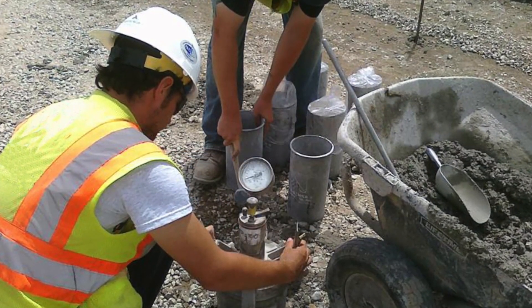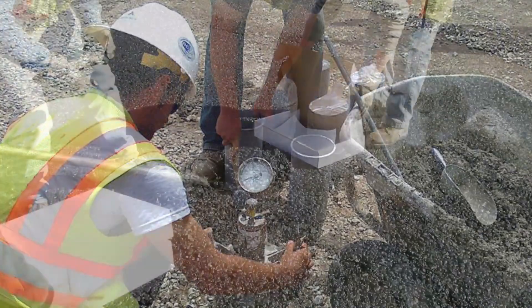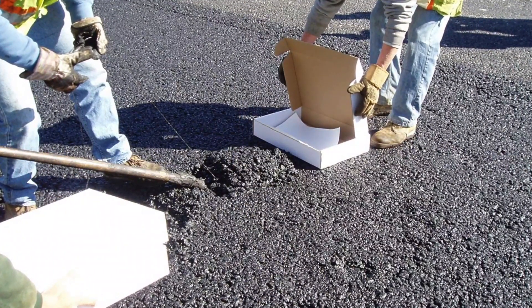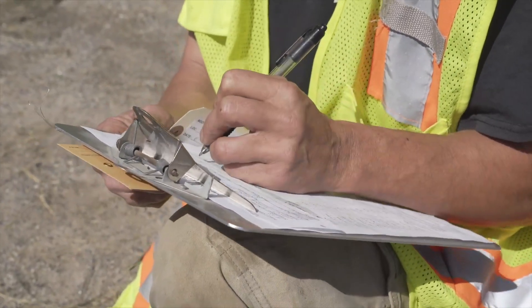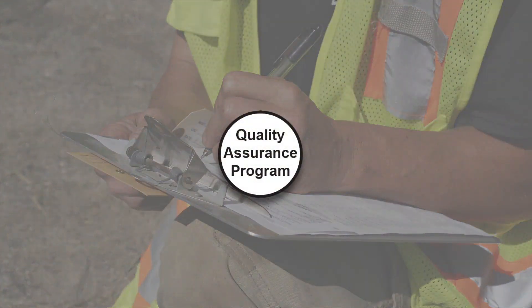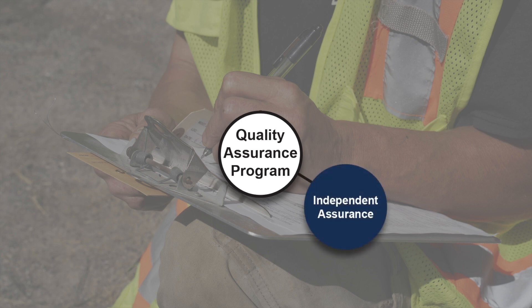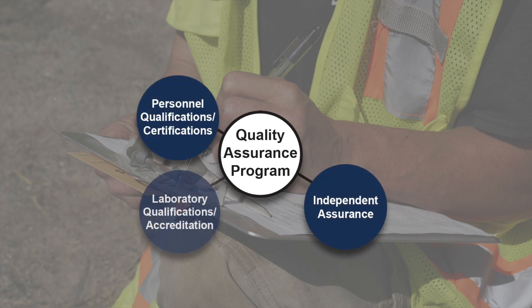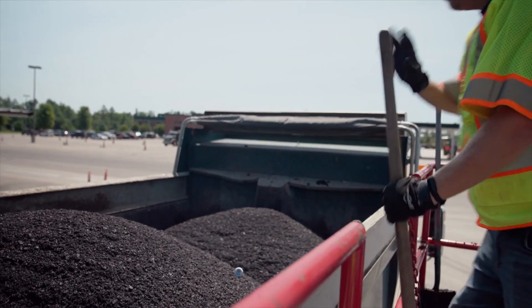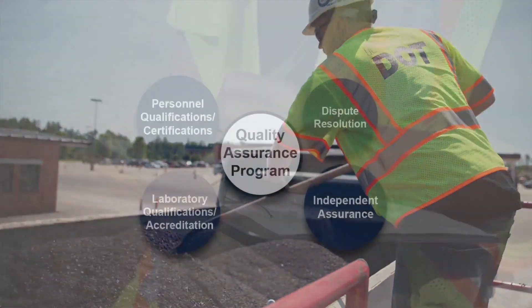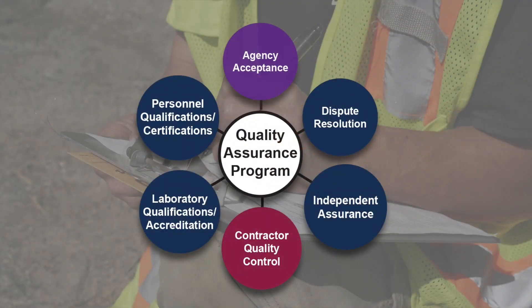Quality assurance responsibilities are shared by the contractor and the agency to achieve a project's contracted level of quality. There are six elements which define a robust state DOT quality assurance program, considered throughout the life of a project. Four elements most directly address sources of sampling and testing variability, including independent assurance, technician qualification and certification, laboratory accreditation and qualification, and materials testing dispute resolution. Reducing variability is important to enable appropriate decision-making in the other two elements: contractor quality control and agency acceptance.